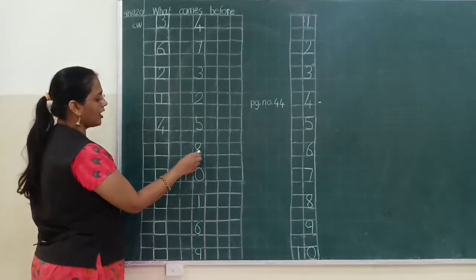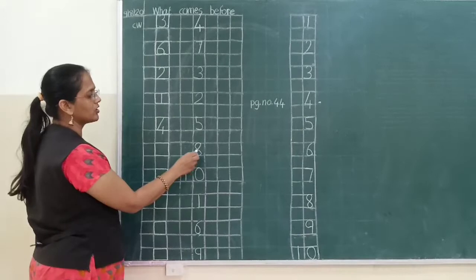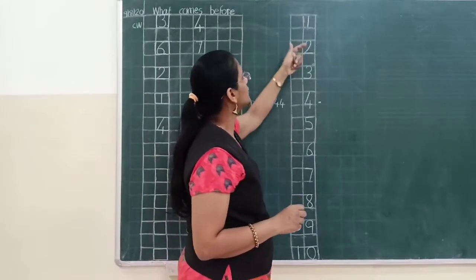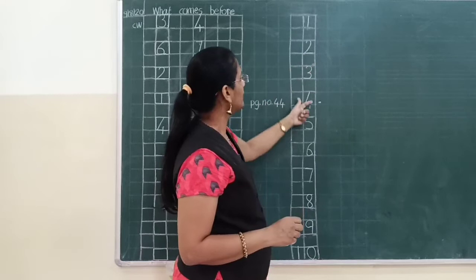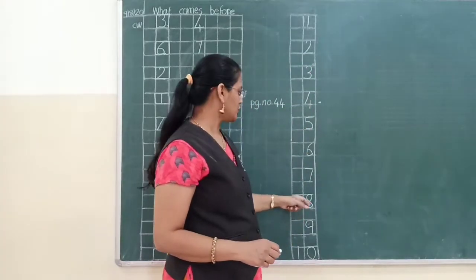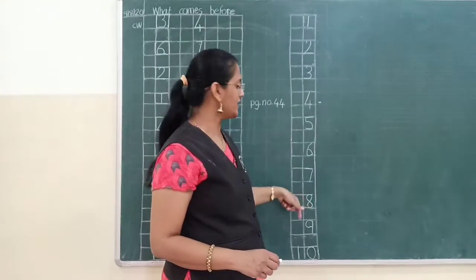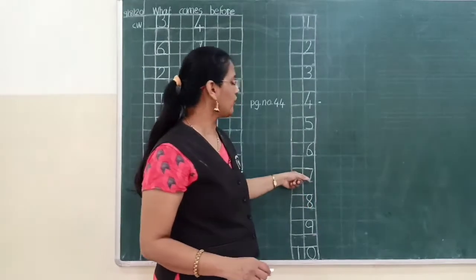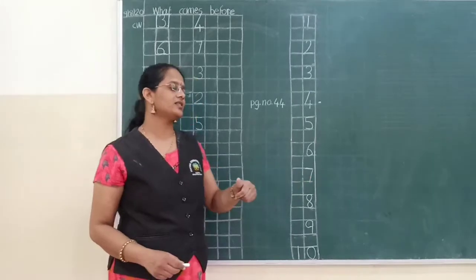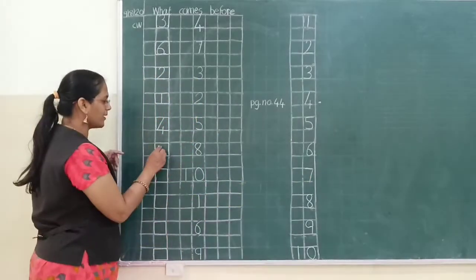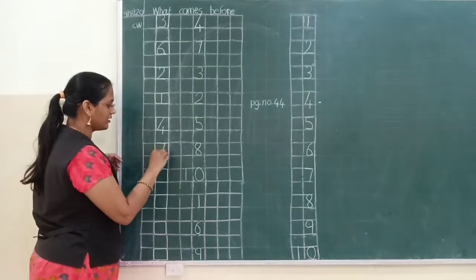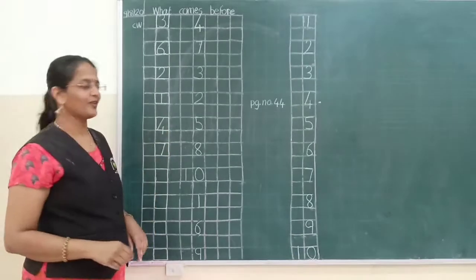Now number eight. Let's see again: one, two, three, four, five, six, seven and eight. So before writing eight, what did we write? Eight likhne ke pehle humne kya likha? Number seven. So same way, yahan pehle hum kya likhenge? Before number eight ka? Number seven.